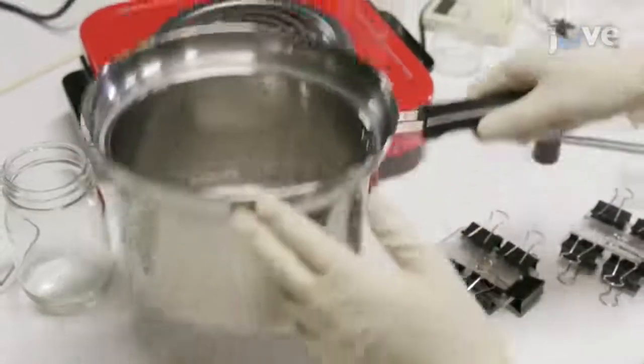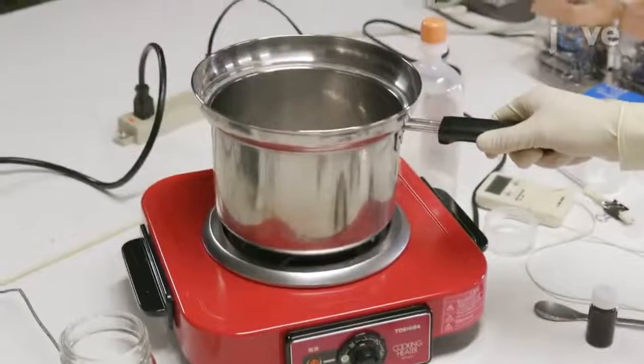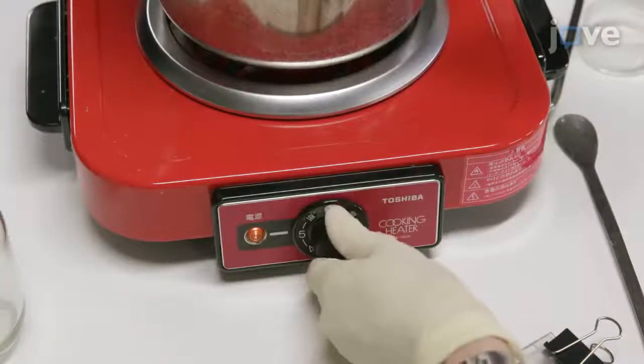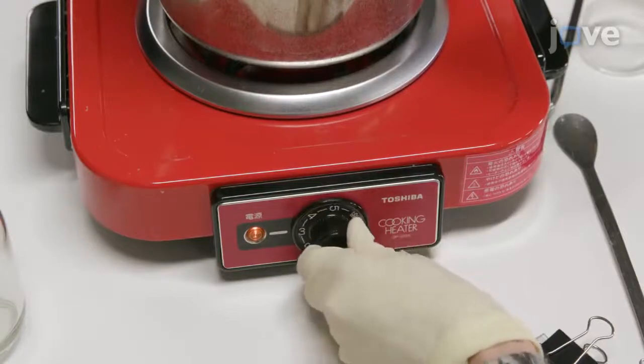Add a thermometer and place the pot on a hot plate at a 1000W setting for 5 minutes. Once the mixture boils, turn the heat to low heat for 3 minutes.